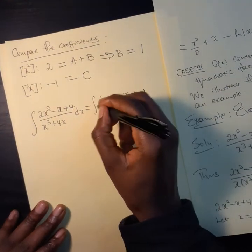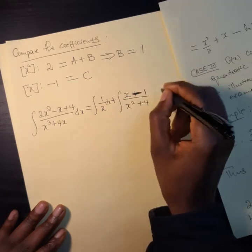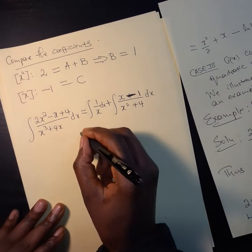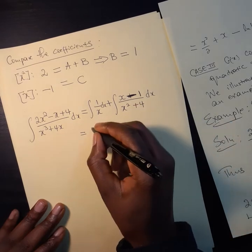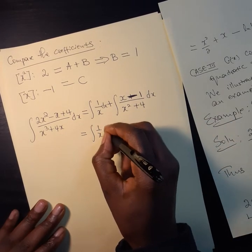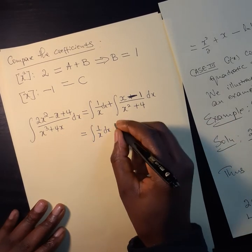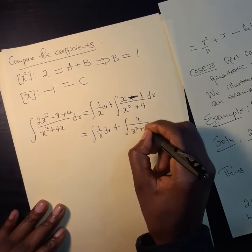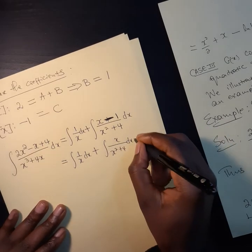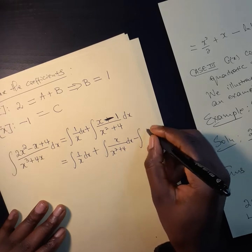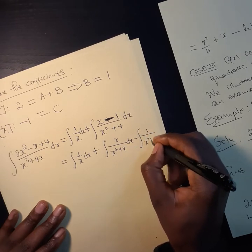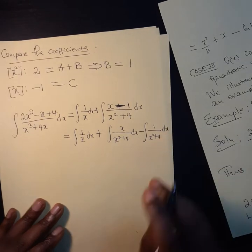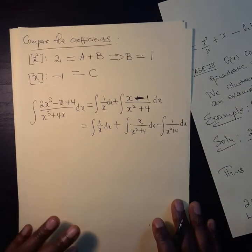So, we are integrating this with respect to x, which is simply the integral of 1 over x dx, plus the integral of x over x squared plus 4 dx, minus the integral of 1 over x squared plus 4 dx.